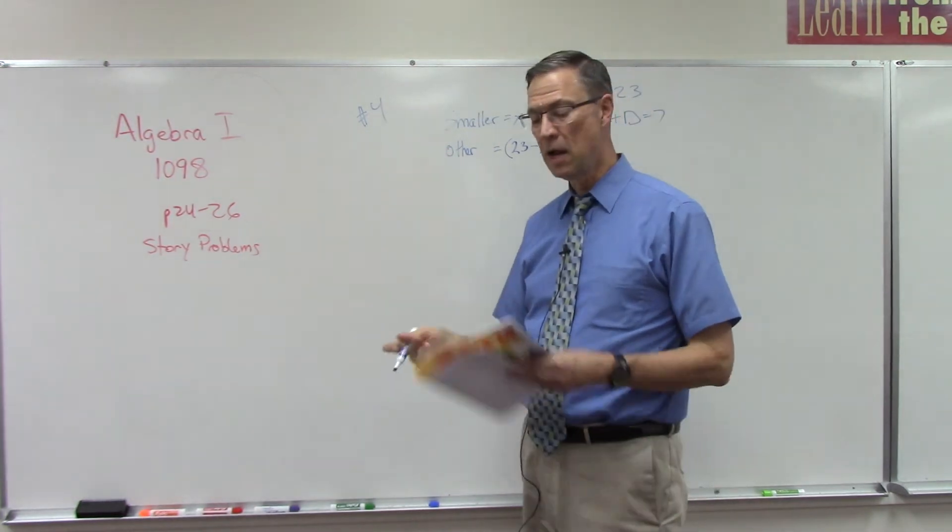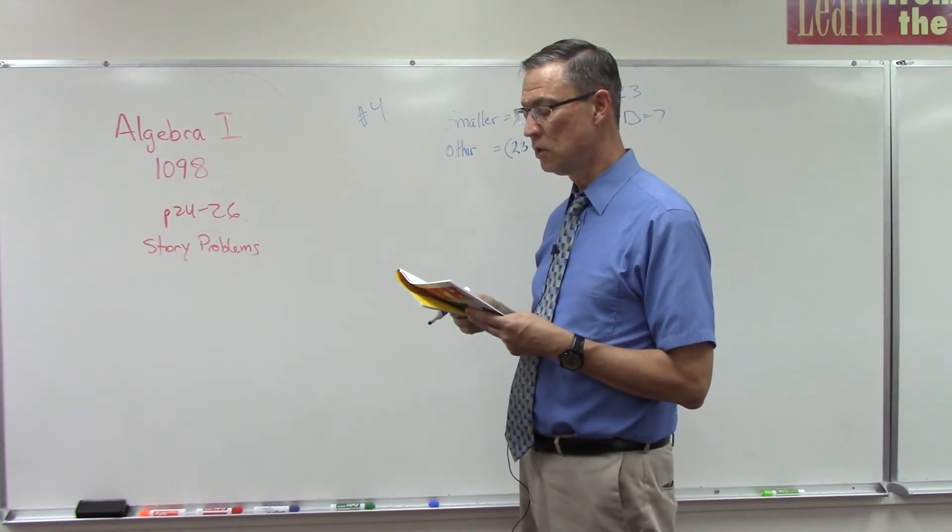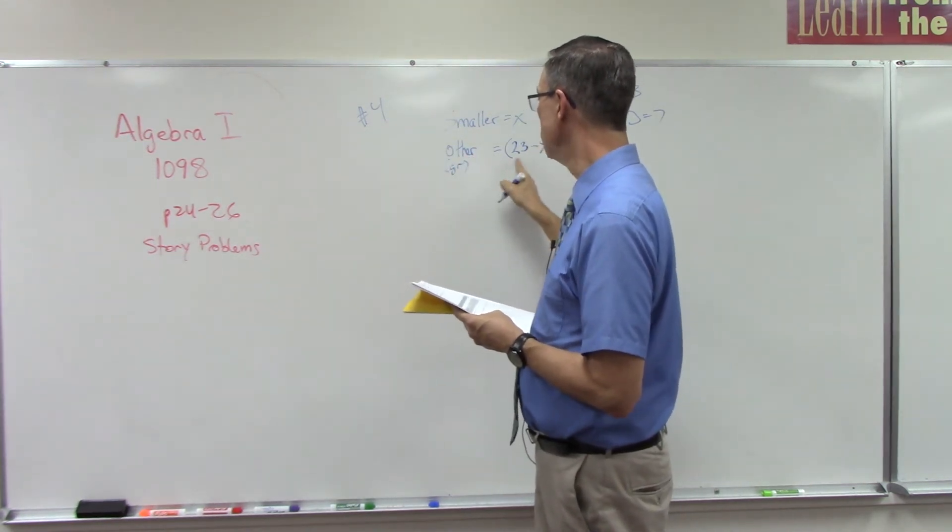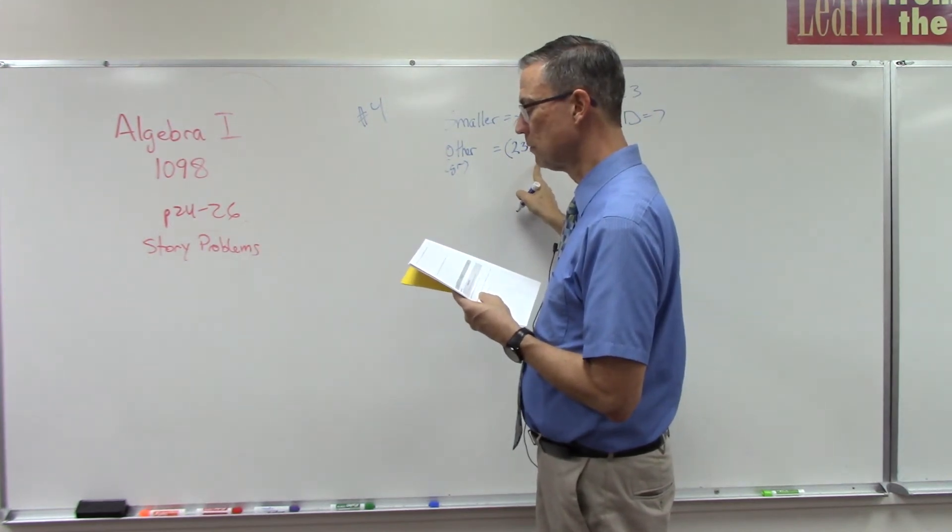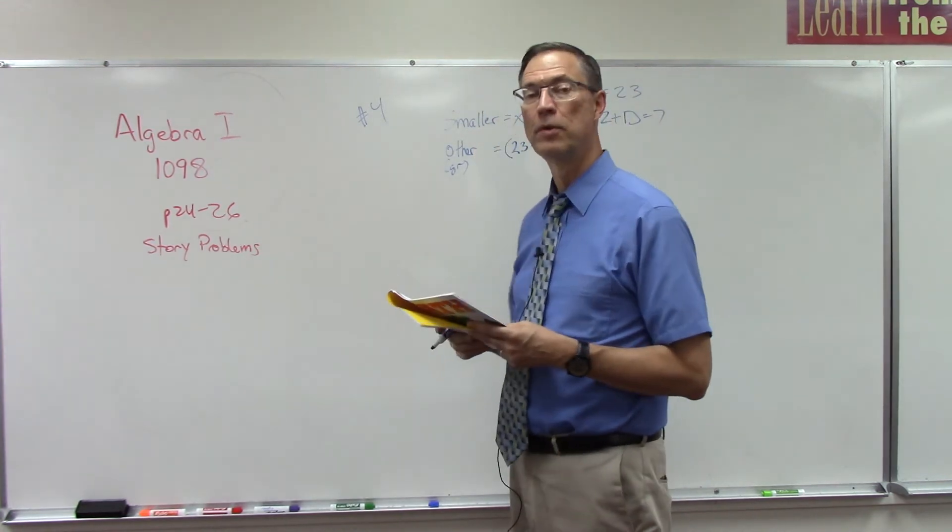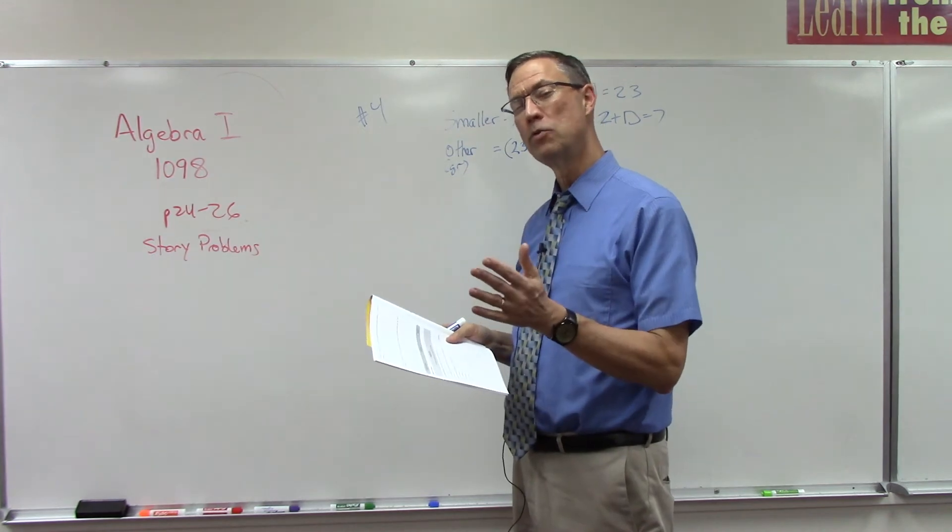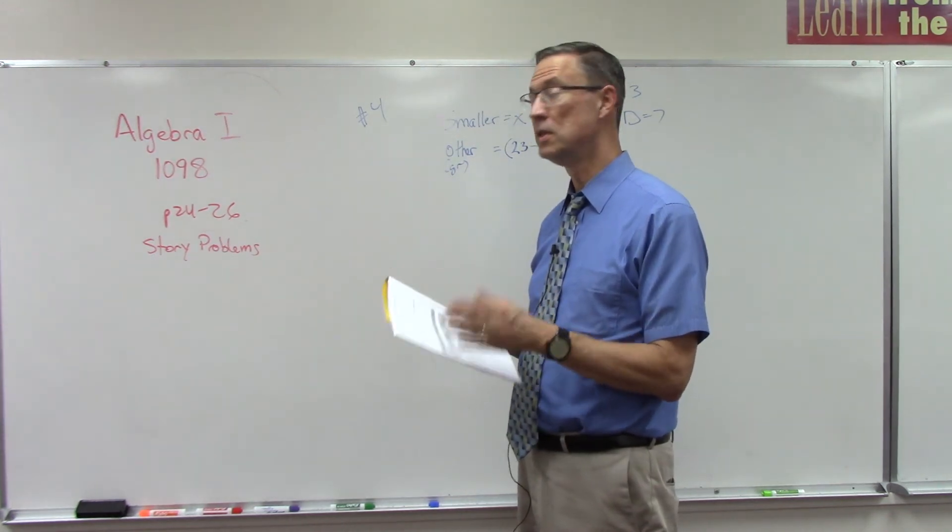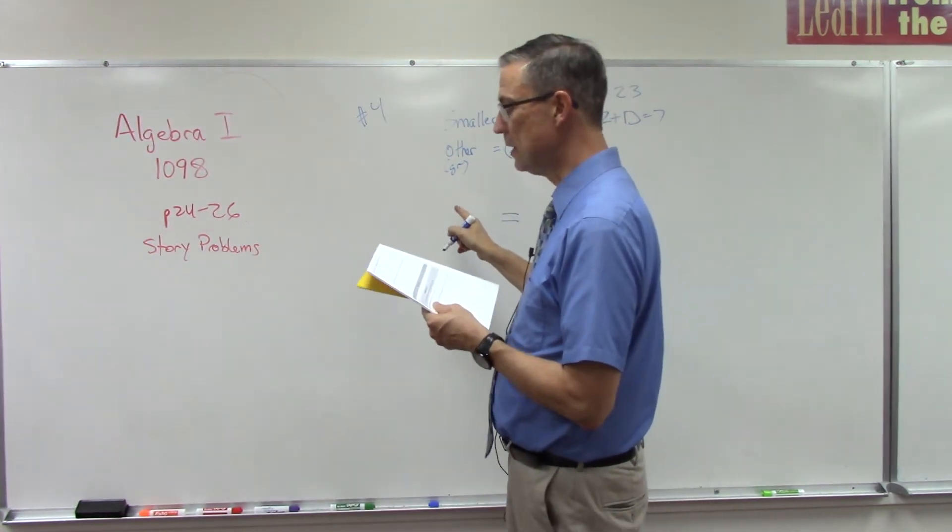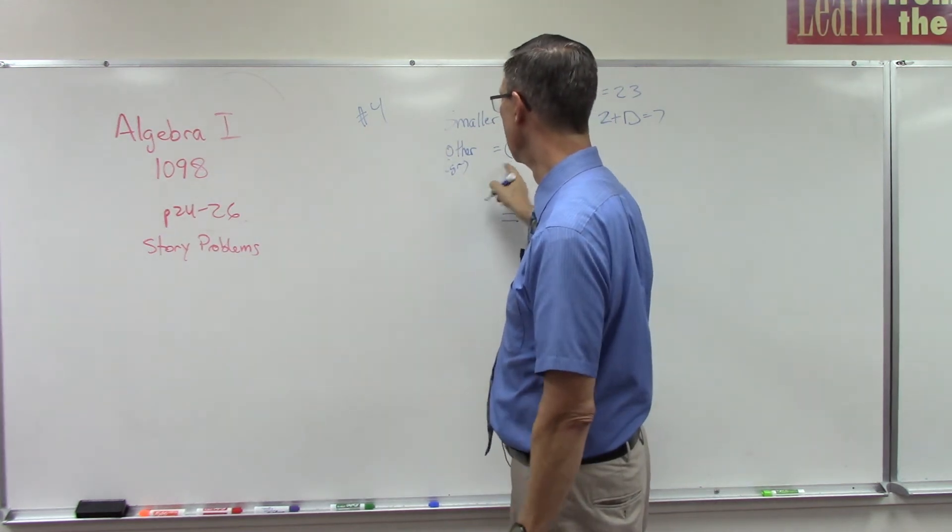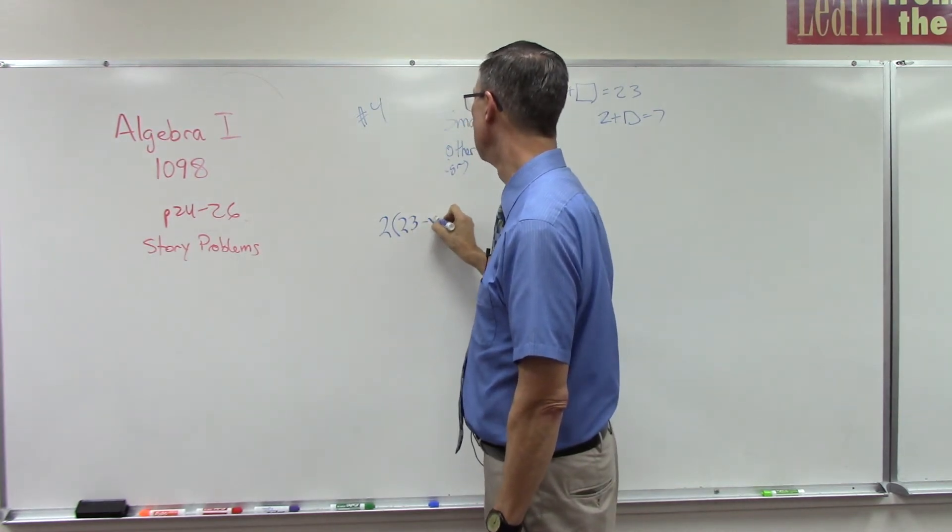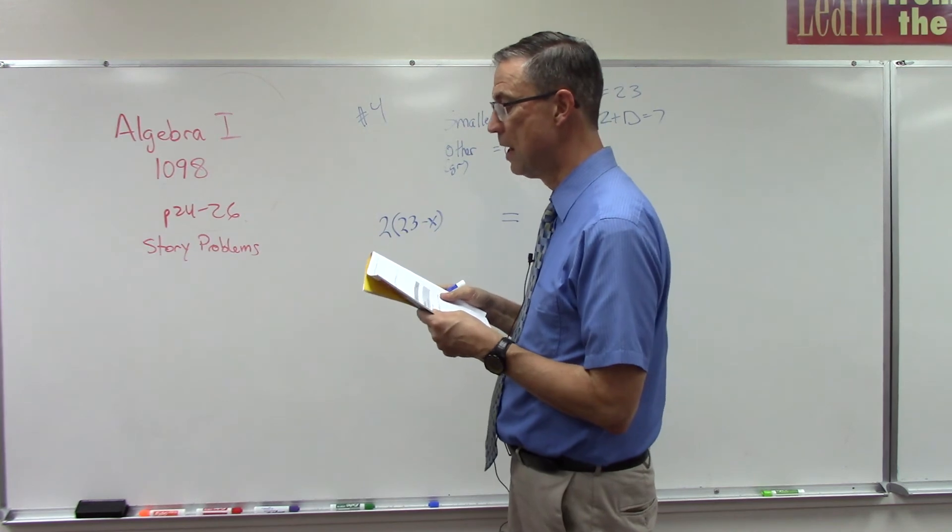Now let's see what else is said here. Twice the greater number—I guess I should also call this the greater number. So two times that, added to three times the smaller number, is 57. Really, really important: hopefully by now you recognize that keyword 'is'—whenever you see the word 'is', that is equals. Now let's go back. It says twice the greater number, so it's going to be 2 times, in parentheses, 23 minus x.